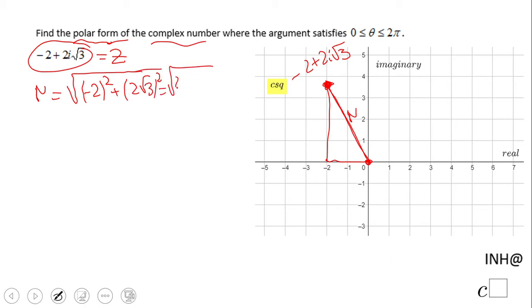Which is gonna be square root of 4 plus 12, which is gonna be square root of 16, and that would be just 4. So that's the first step, finding this r.